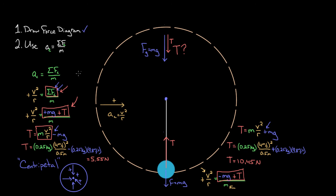To recap: when solving centripetal force problems, we write V²/R on the left-hand side as a positive acceleration, which selects 'toward the center of the circle' as positive. All forces directed inward are positive. Be careful — downward forces can count as positive centripetal forces if down corresponds to toward the center. And just because a force was positive at one point in the motion, like gravity at the top, doesn't mean it will be positive at another point.